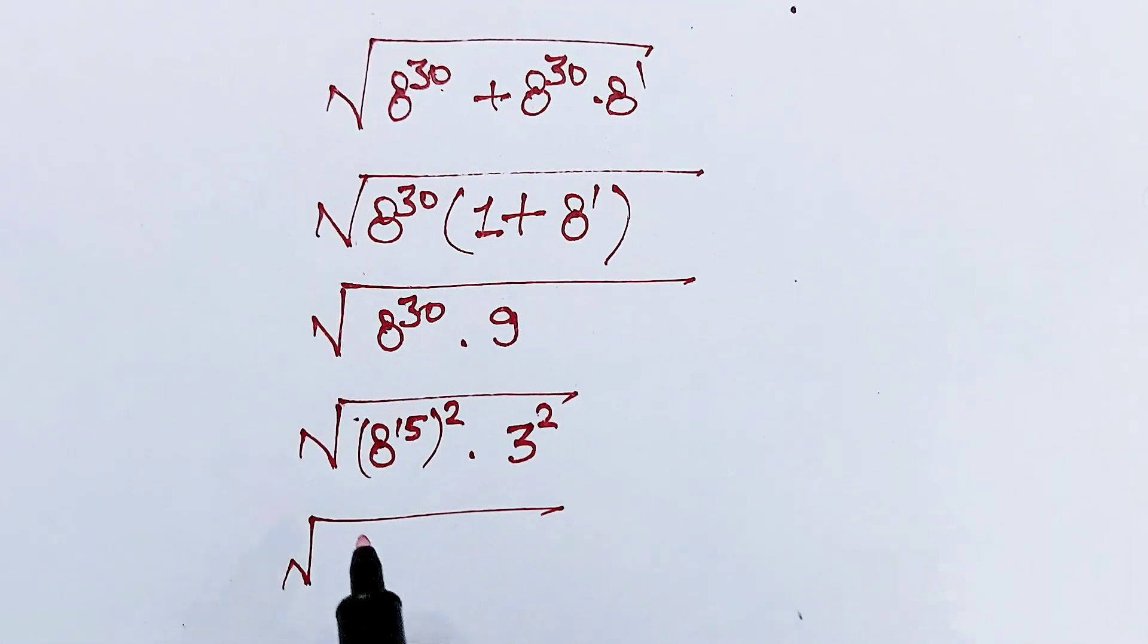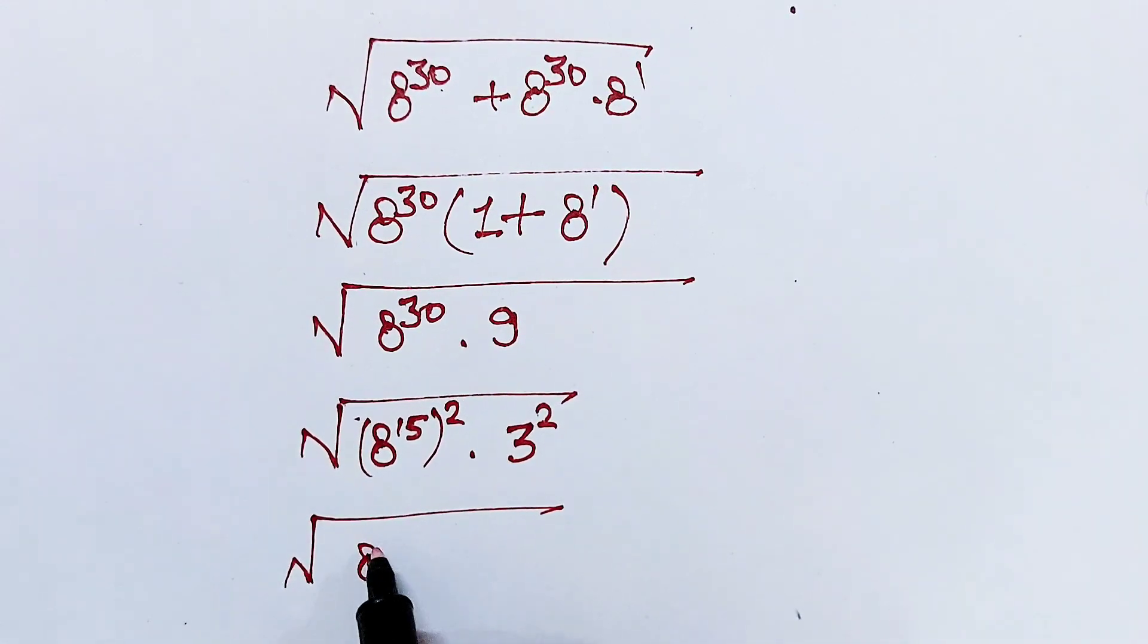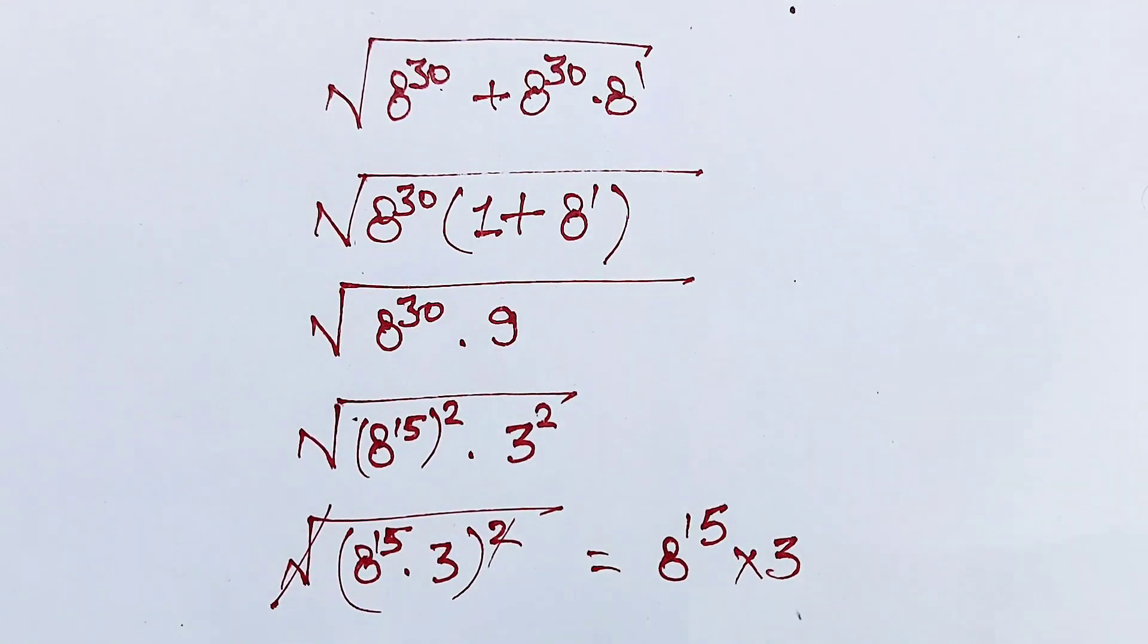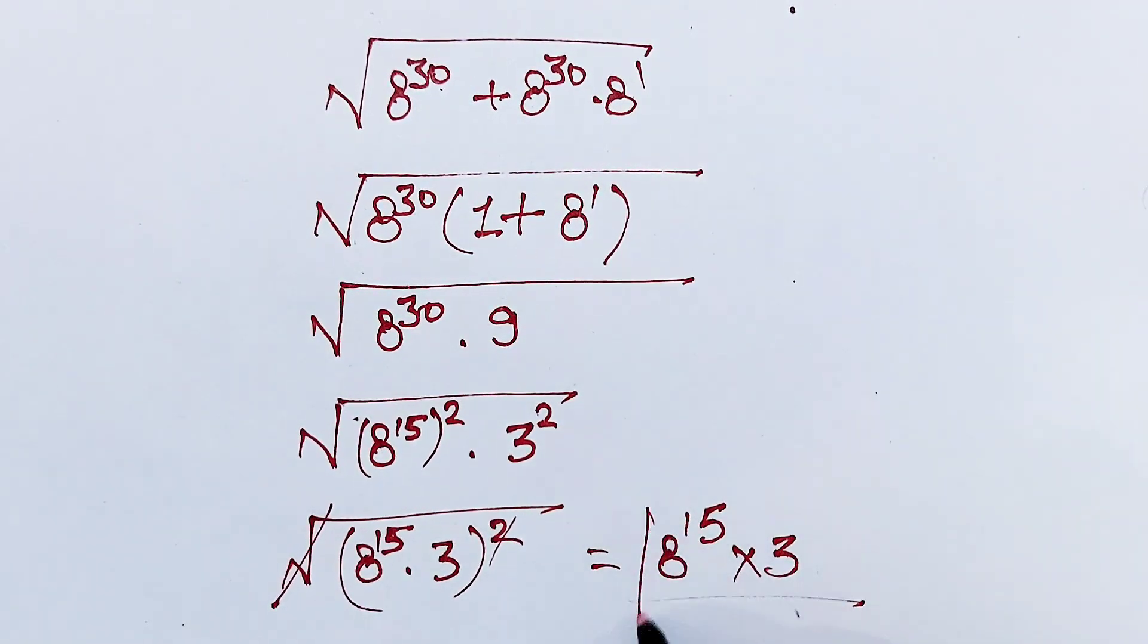This expression is the same as (8^15 × 3)^2. Now this square cancels out this square root, and this equals 8^15 × 3. That is our final answer.